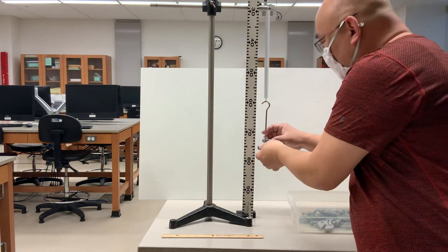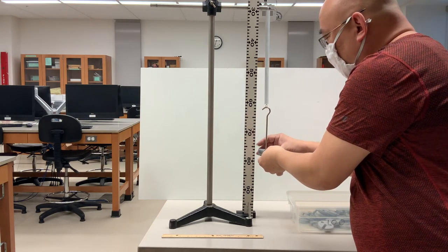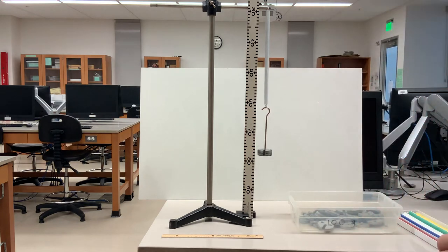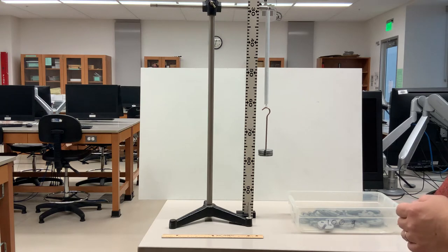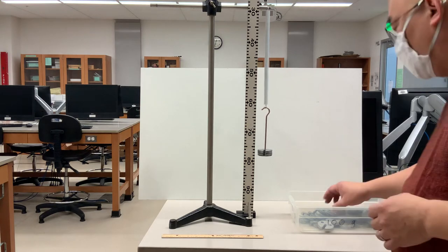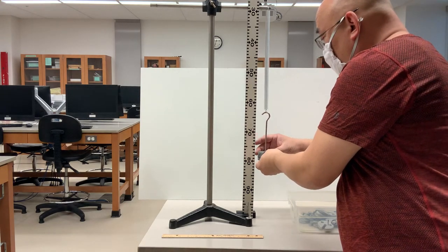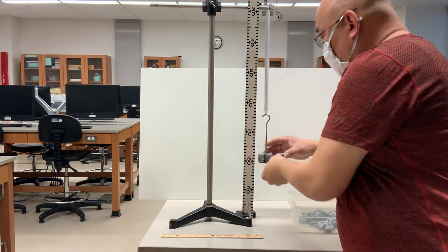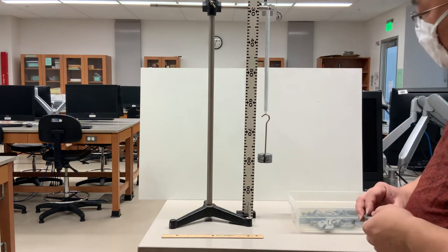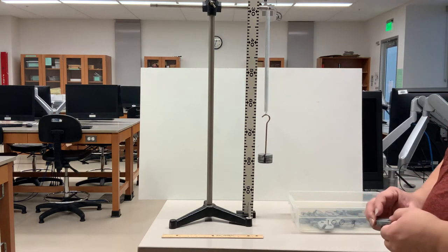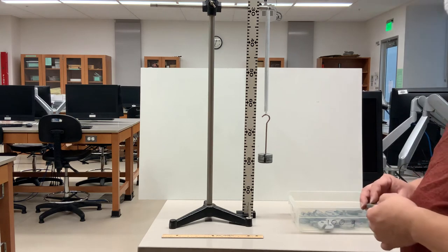All right, next mass. Adding an additional 100 grams, it's now 250 grams on the spring there, or 0.250 kilograms. This is 350 grams or 0.350 kilograms. You can measure the displacement from this original position.